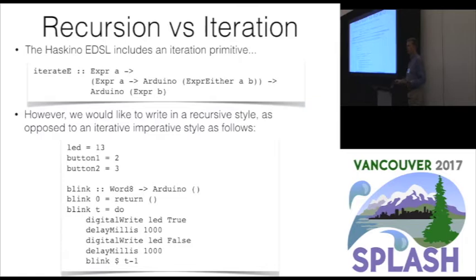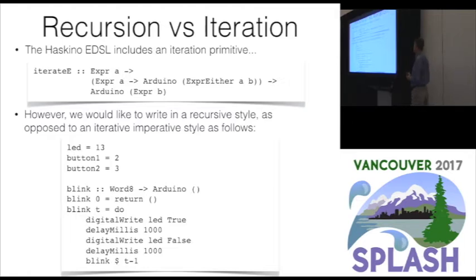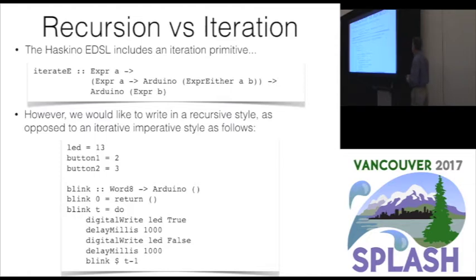Our goal is to program the Arduino in a functional nature rather than the imperative C style. We want to use Haskell as a functional language — using recursion rather than iteration constructs. The DSL has an iteration operator: it takes an initial value, and the body of the iterator takes that initial value type and returns an either — either a value of the initial type or a value of the return type. This required us to add an either to our DSL expression language, but this iterate structure allows us to do the type of transformation I'm going to describe.